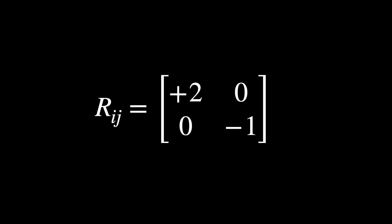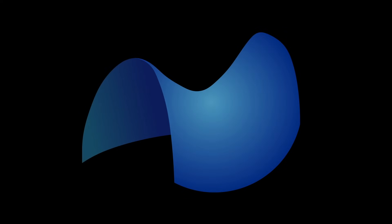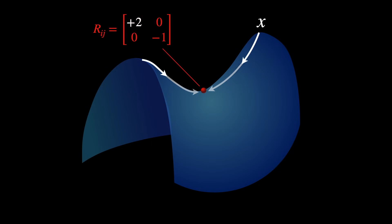This matrix tells us that geodesics along the x-axis tend to converge, so positive curvature, while those along the y-axis diverge, so negative curvature. A point in a space that behaves this way is called a saddle point. At this point, the curvature matches this matrix, compressing space in one direction and stretching it in the other.